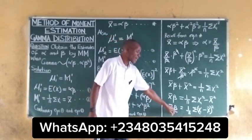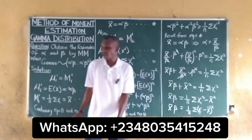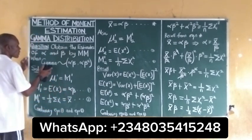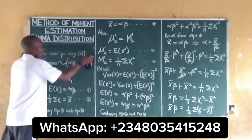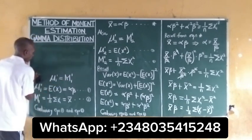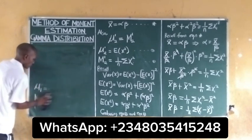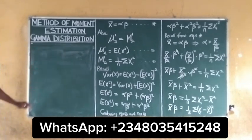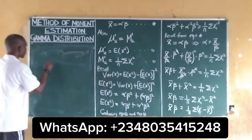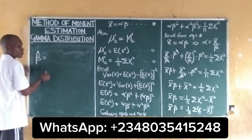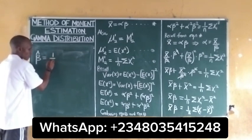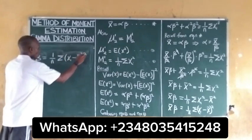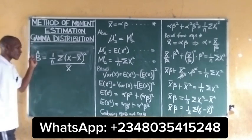To get the beta estimate, we make beta the subject of the formula. Dividing both sides by x-bar, the estimate of beta is: beta-hat equals (1/n)·summation of (x_i minus x-bar) squared, all divided by x-bar.